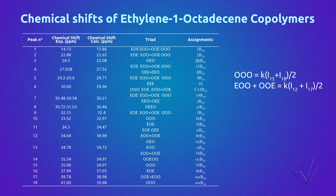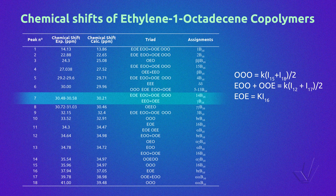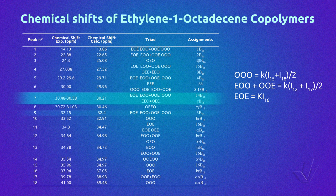Triad E-O-E is represented by peak 16. Triads E-E-O plus O-E-E can be related to peaks 4 and 7, but as peak 7 is very close to other peaks, it is preferable to use only peak 4, which is more isolated. In both cases, those peaks also represent a carbon atom of the branch from all the triads centered in 1-octadecene, that is E-O-E, E-O-O plus O-O-E, and O-O-O. As those triads are also represented by peak 9, we can subtract the integral of peak 9 to obtain the triads E-E-O plus O-E-E.